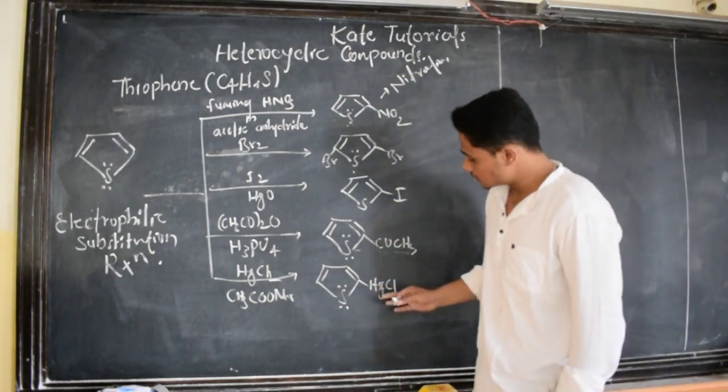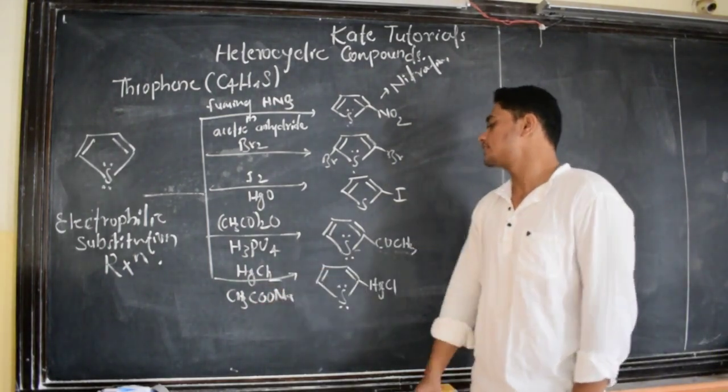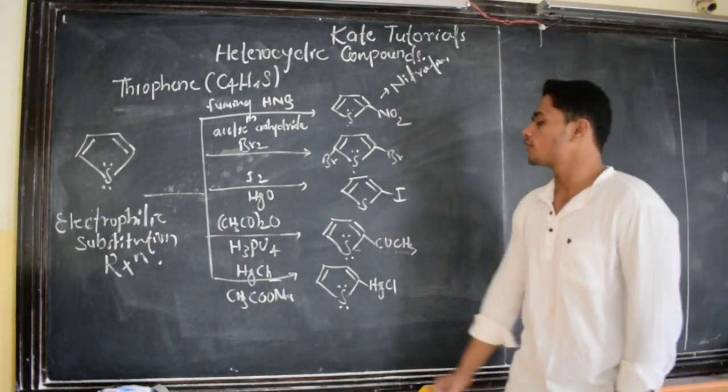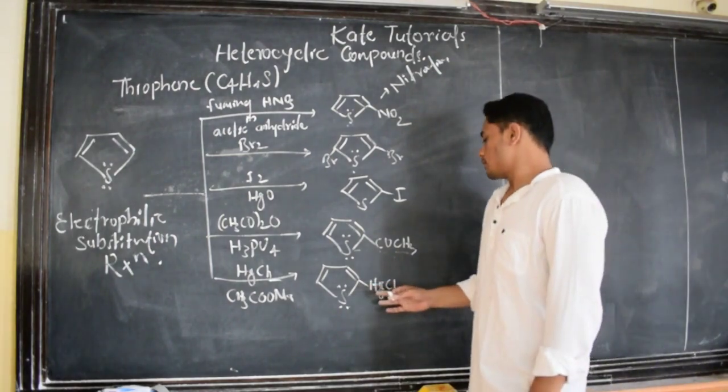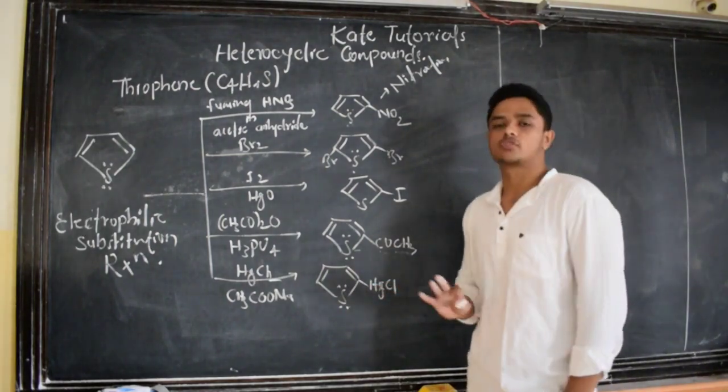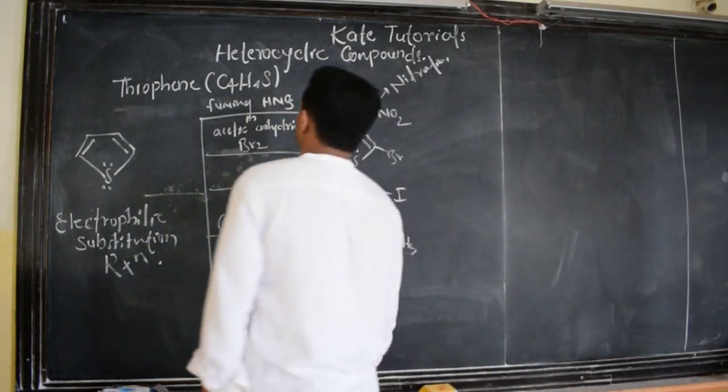And here this is mercuric acetate, HgCl2 in presence of CH3COONa, sodium salt of acetic acid, we are going to get 2-mercury chloride thiophene. These are few examples for electrophilic substitution reaction.